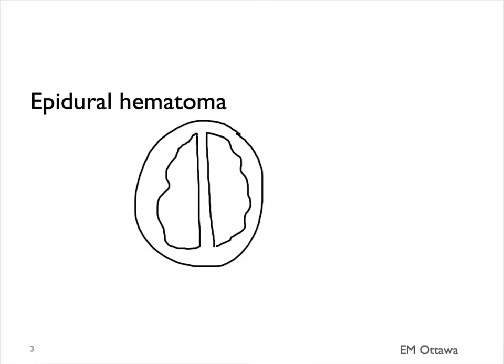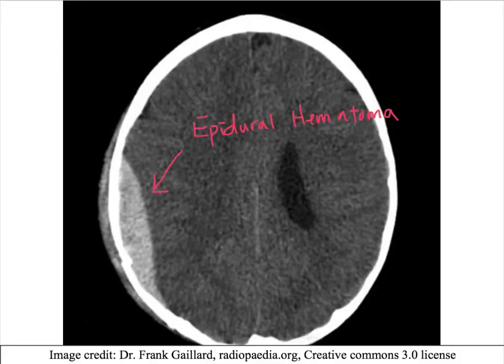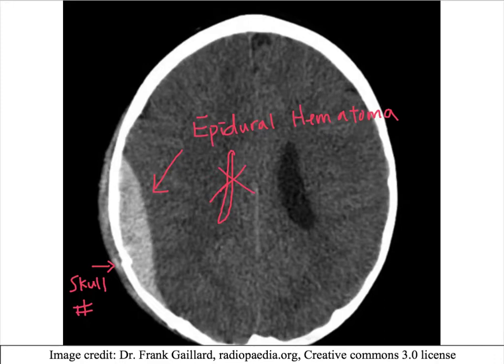First, epidural hematoma. An epidural hematoma, as you might remember, is on top of the dura. Since the dura is deeply attached to the inner table of the skull, the blood will look lentiform. On a CT head, it will look like this. The white is the epidural hematoma. You may also notice that the contour of the skull is uneven here, suggesting a skull fracture. Notice also how the ventricle on this side is completely obliterated, due to the mass effect of the epidural hematoma.